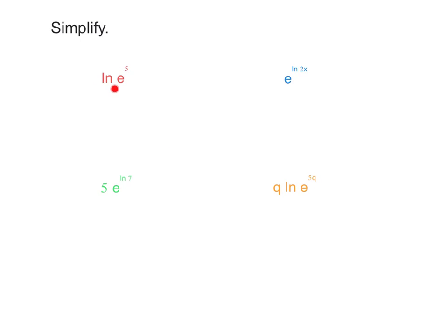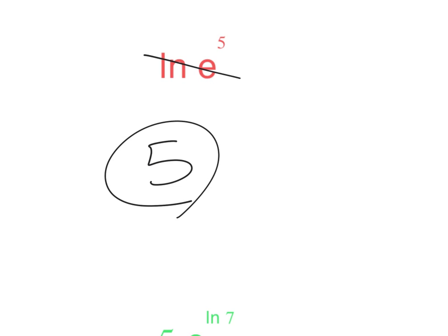Let's go ahead and do a few examples. First off, if we started with ln e to the 5th, well ln and e are inverses of each other and we're just going to be left with 5.